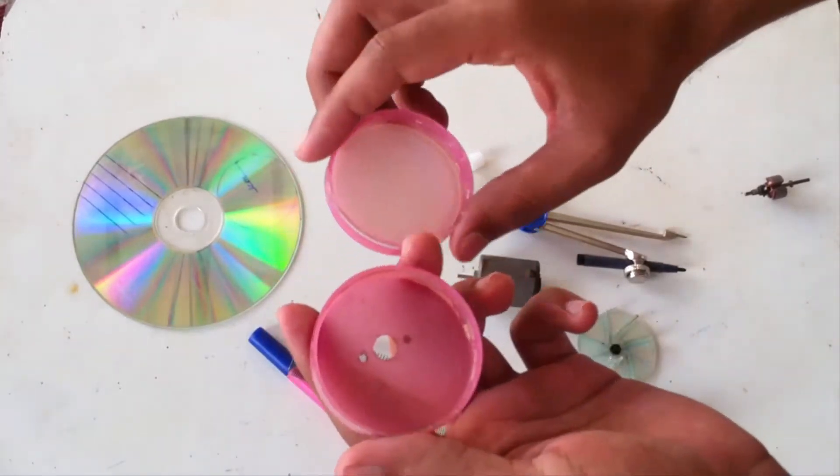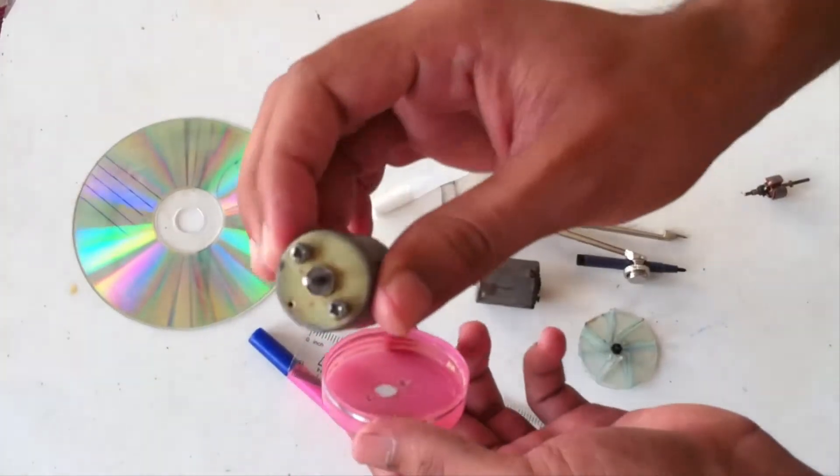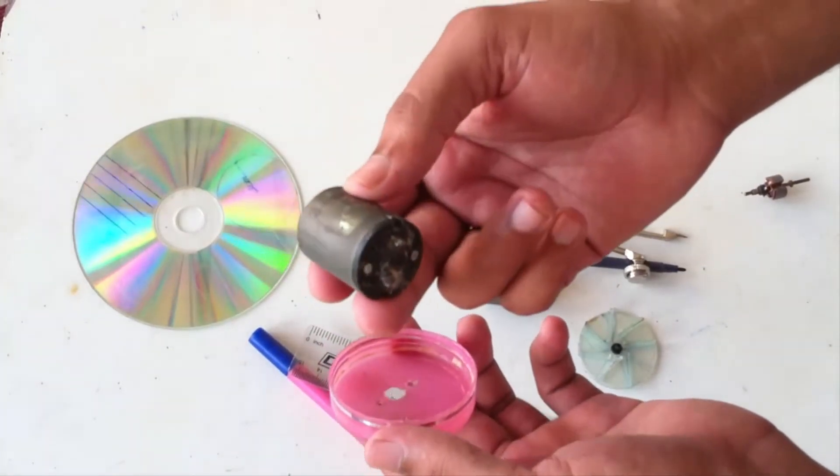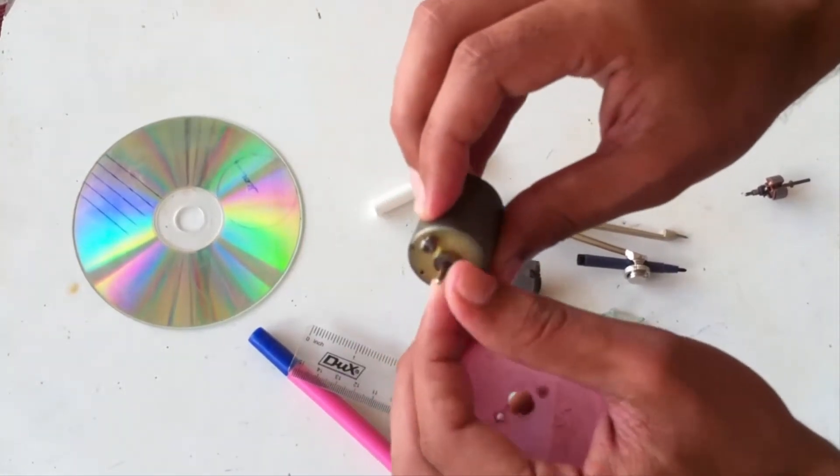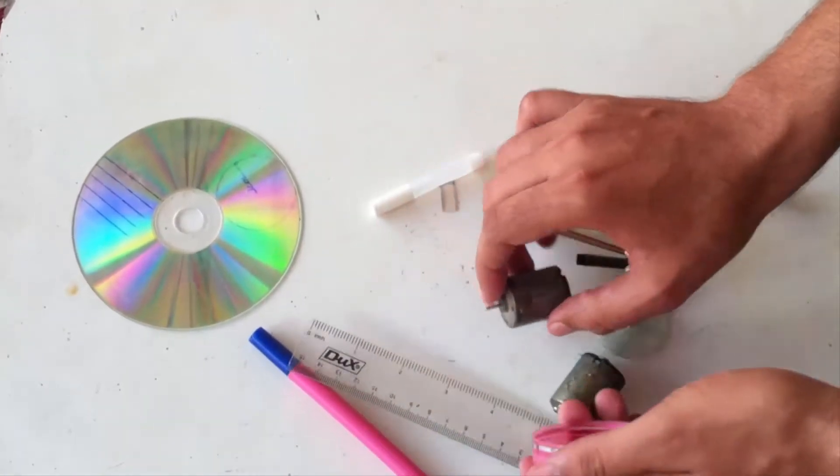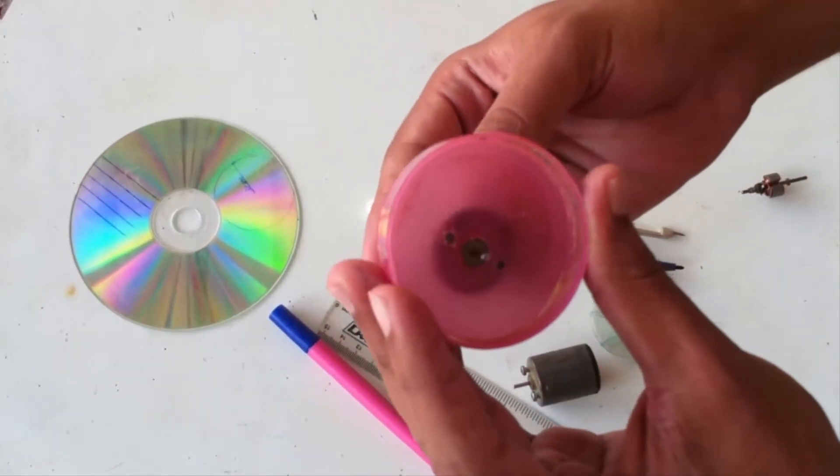We need to have some holes in this lid. Just make sure that this hole is not in the center, just a little away from the center, so that we can place the DC motor. This is a 12 volt motor with almost 11,000 RPMs.